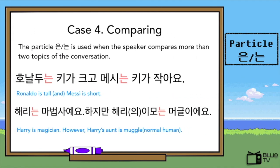The last case is comparing. The particle 은/는 is used when the speaker compares more than two topics. For example: 호날두는 키가 크고 메시는 키가 작아요 — Ronaldo is tall and Messi is short. We are comparing their heights, so we use 은 or 는. Another sentence: 혜리는 마법사예요, 하지만 혜리 이모는 머글이에요 — Harry is a magician, but Harry's aunt is a muggle. Here we are comparing their magical abilities, so the particle 은/는 is used again.